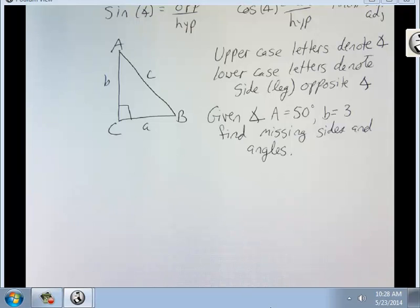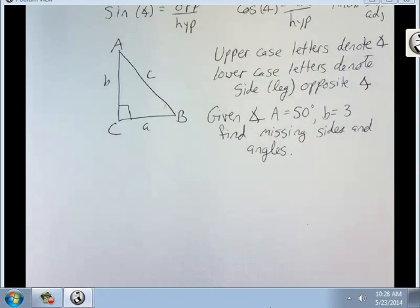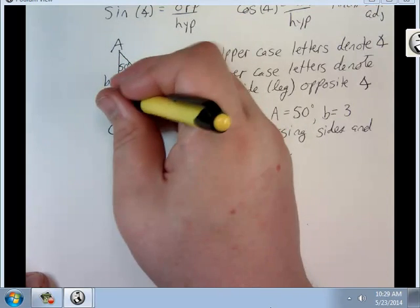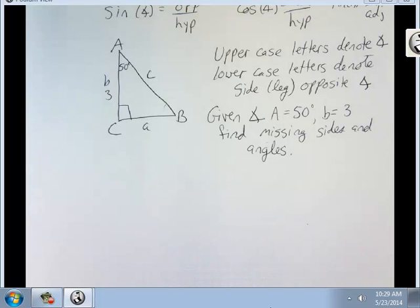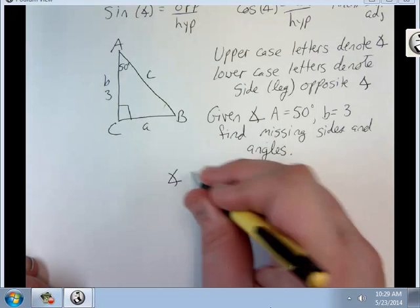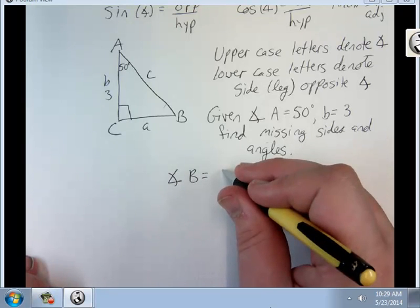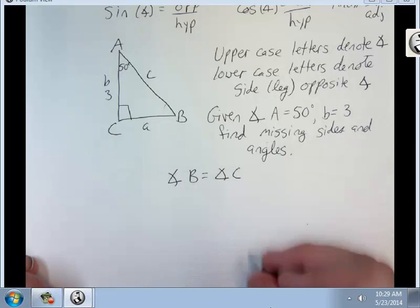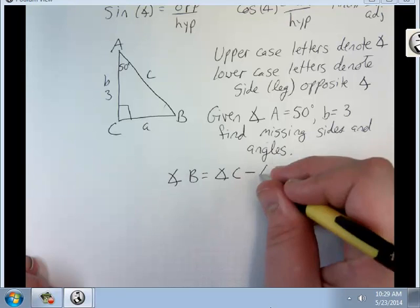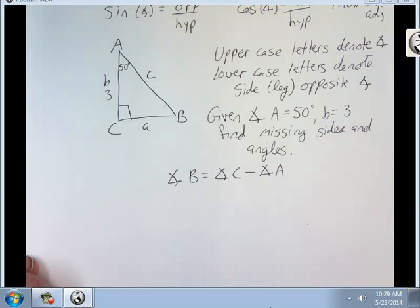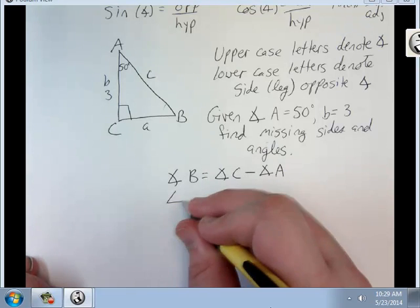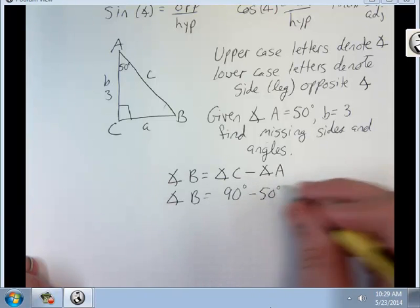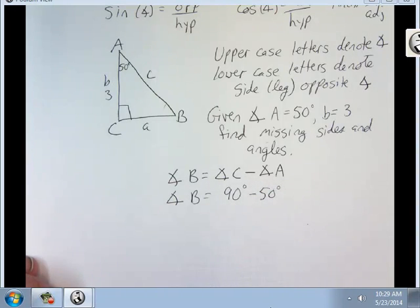I know two of the angles, so it's really easy to find this third one here. This is 50, and this is 3. So angle B must be angle C minus angle A. So angle B equals 90 degrees minus 50 degrees, which equals 40 degrees.